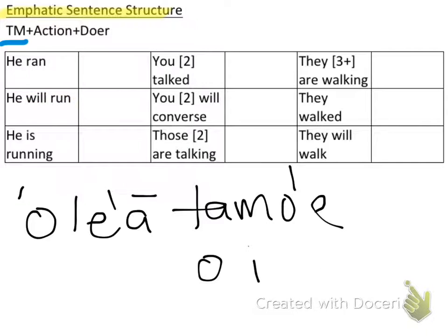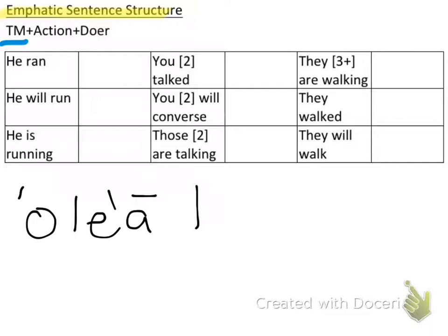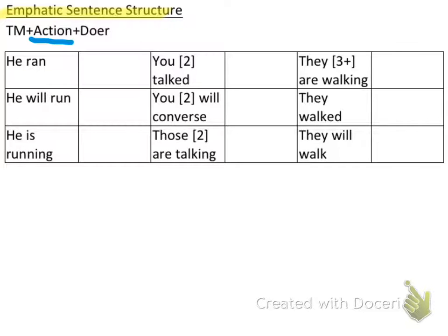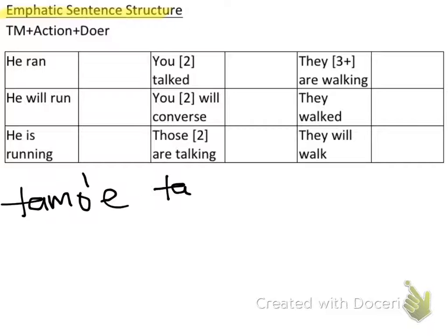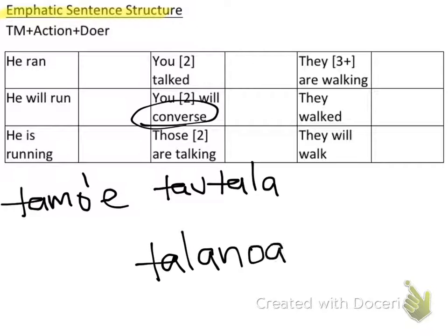I want you to work on the next seven phrases on your own using the tense marker, action, doer structure. I've given you the tense markers and the doers — I just need to give you the actions. Run is 'tomoe.' Talk is 'tautala.' Converse is 'talanoa.' And walk is 'savali.' Those are your action words and they go in the middle: tense marker first, then the action word, then the pronoun or doer.